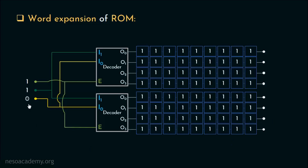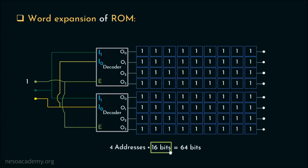Finally, for input 11 the output lines o3 will be activated and we access 16 more bits. So we have four addresses and one word in this circuit is 16 bits, giving a total of 64 bits stored. The word size has been increased to 16 bits. For word expansion, all we have to do is connect all the enable lines and feed one through them. That will be all for this session — I hope the concepts of address and word expansion of ROM are now clear. The next session will be dedicated to numerical problems, so I hope to see you then. Thank you all for watching.